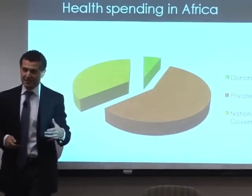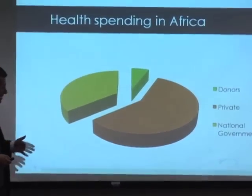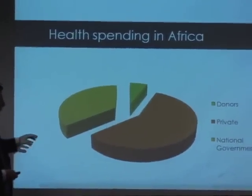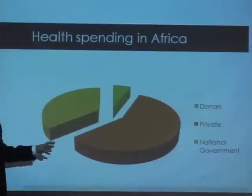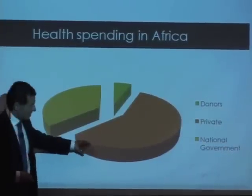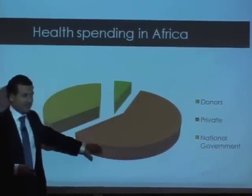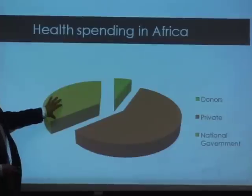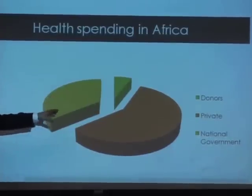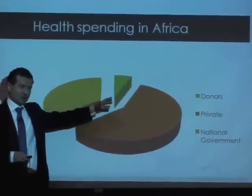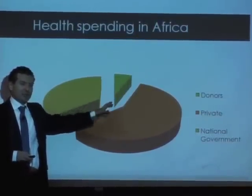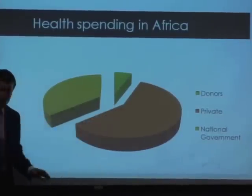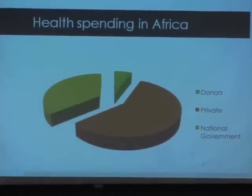Africa is where most donors are concentrated. What's different from health spending in rich countries is that the biggest chunk here is private out-of-pocket health expense, and national governments have another relatively large chunk. So when we're talking about donor financing for health and setting the priority agenda, we're actually talking about a pretty small portion of total health spending.